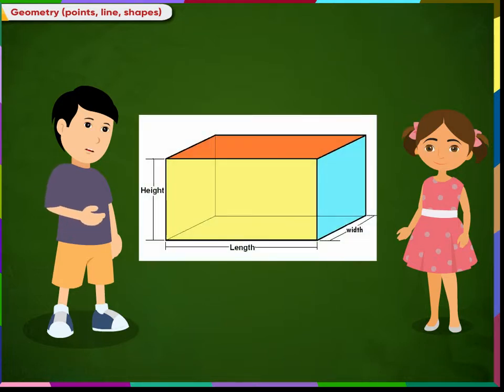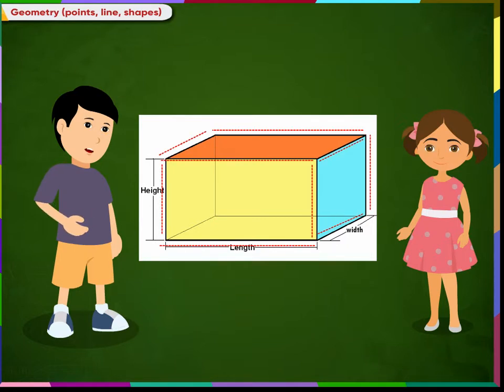This is a cuboid. A cuboid has 6 flat surfaces, 8 corners and 12 edges. You can observe all its edges are straight lines.